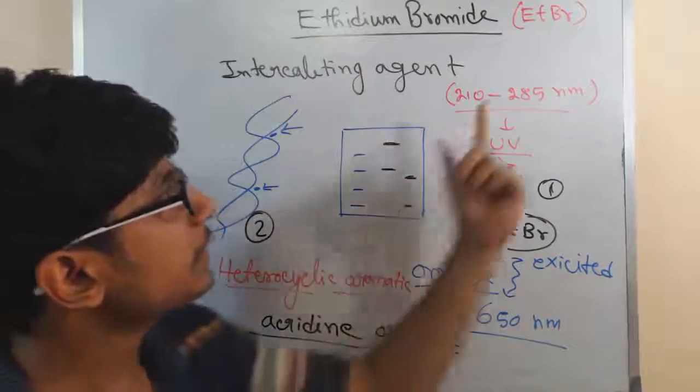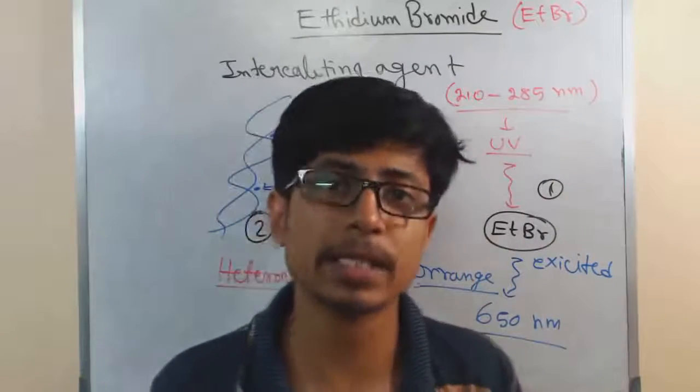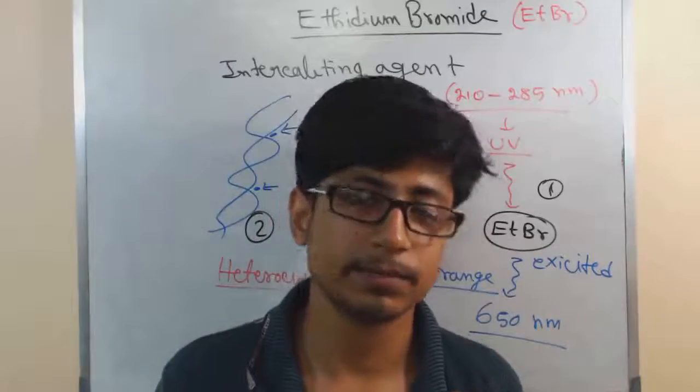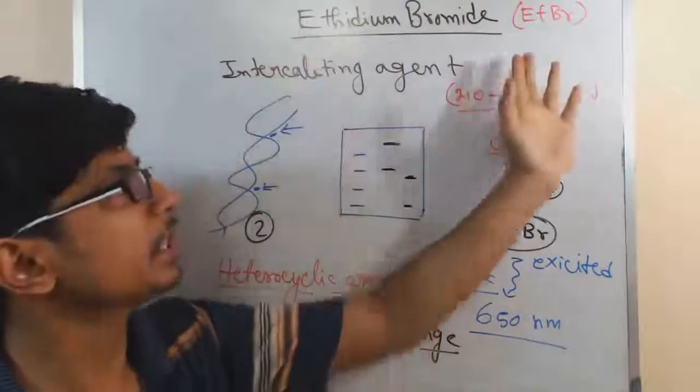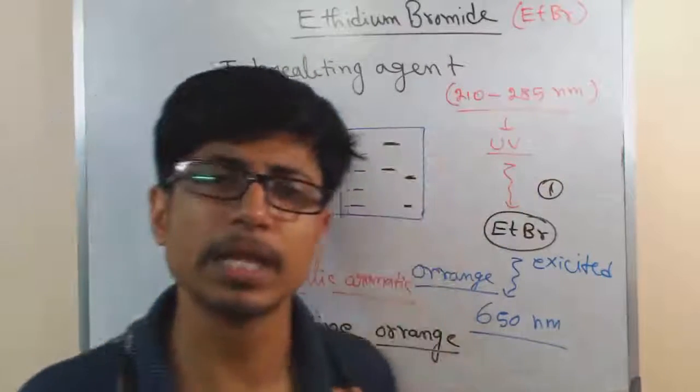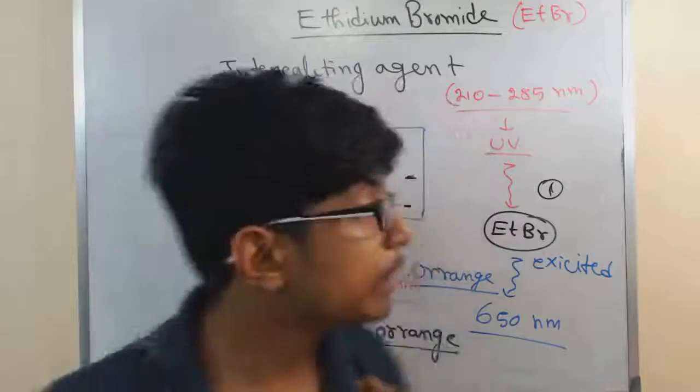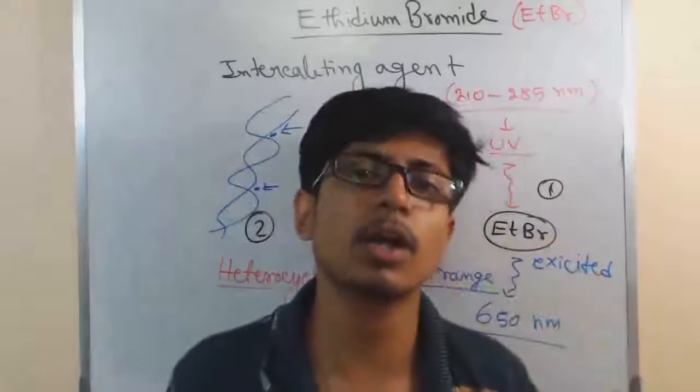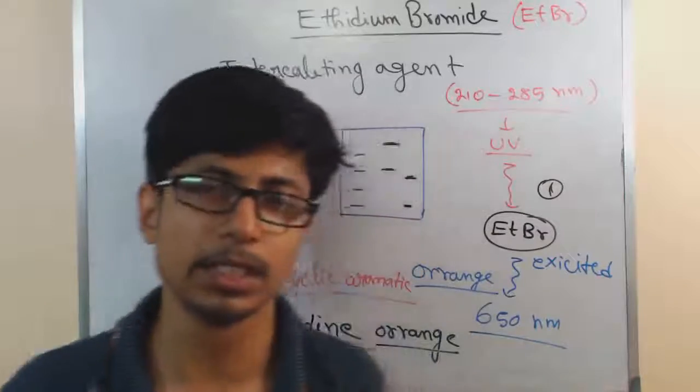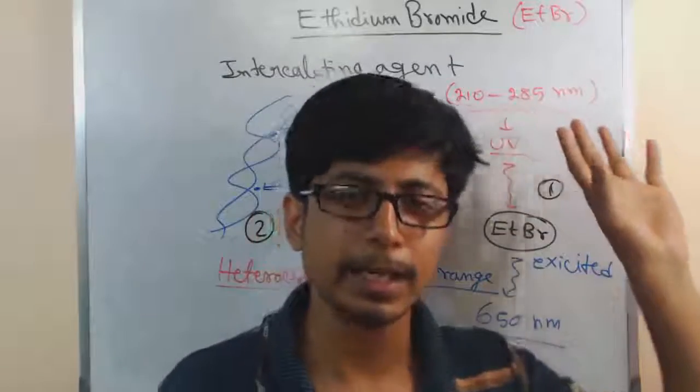Another thing is that this ETBR can also be used against trypanosomiasis disease. Previously it was used during 1950s and 60s against those trypanosomiasis infections. But in those cases, it was found that ETBR started to raise a lot of resistance strains in bacteria, so that is why we also stopped that process.